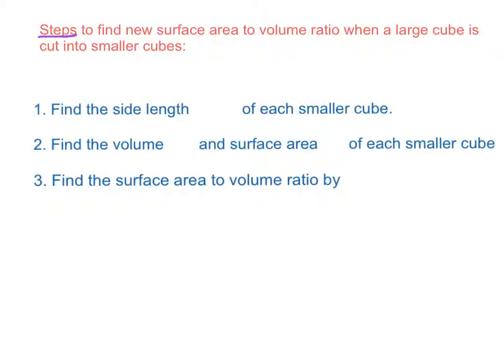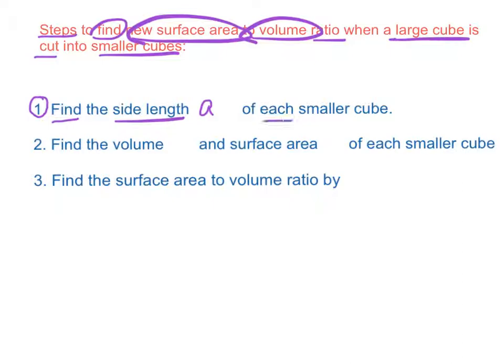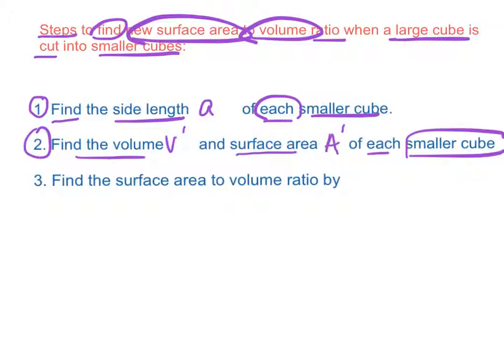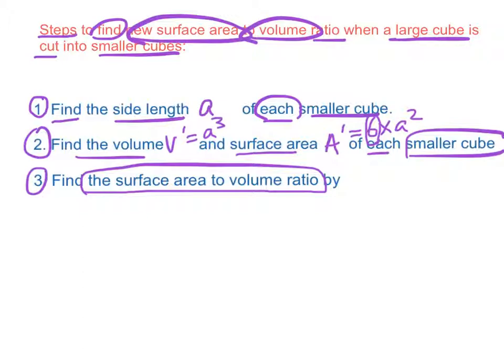Let's see the steps to find the new surface area to volume ratio when a large cube is cut into smaller cubes. First step: find the side length a of each smaller cube. Second: find the volume V_i and surface area A_i of each smaller cube with A_i equals 6 times a squared, because there are 6 faces, and V_i equals a cubed. The last step: find the surface area to volume ratio by the formula A_i over V_i which is 6a² over a³ equals 6 over a.